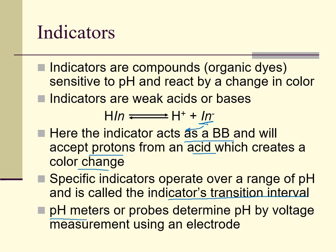We can also use pH meters, which are electronic, or pH probes which may hook up to a computer. They determine the pH by measuring a voltage difference using electrodes. There would be no color change using those, but you should be able to see a display that reads pH, or if pH is changing you can watch the change happen in real time on a computer — it may even graph for you.